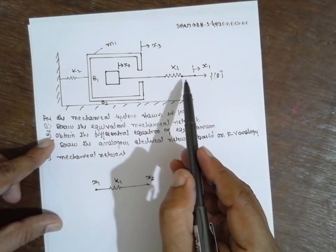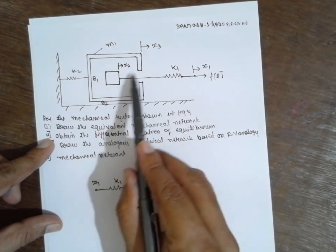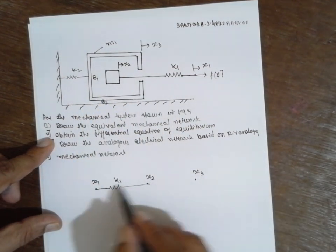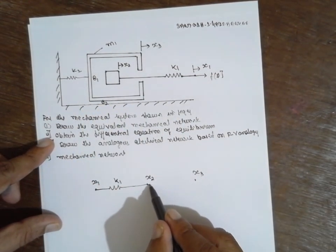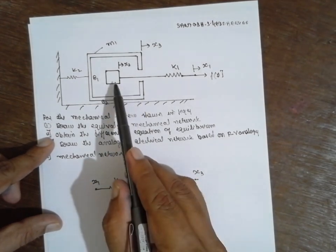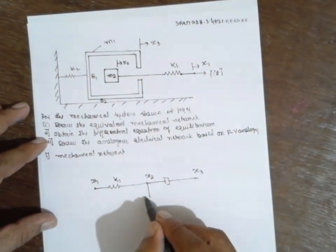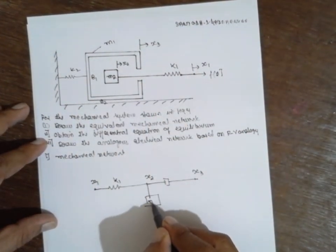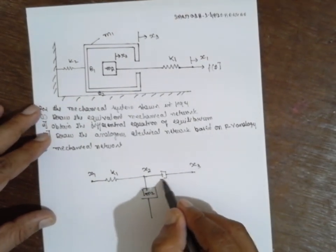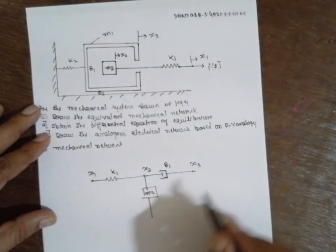Now between x2 and x3, this is a damper which is present between these two. And x2 has a mass m2 which is connected at the bottom. It has to be grounded. This is nothing but B1.